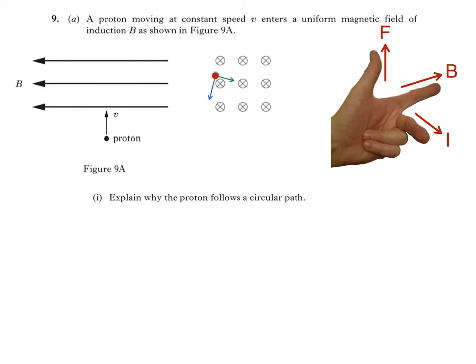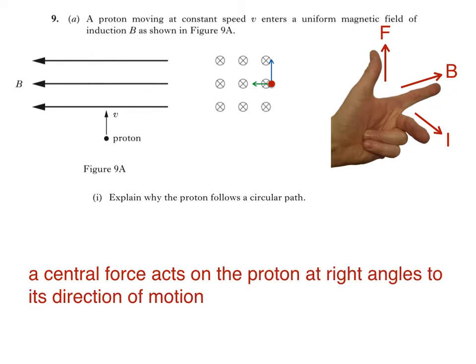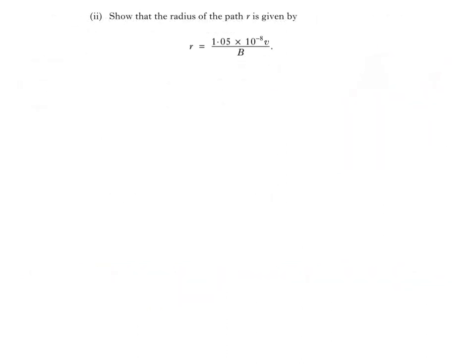At this point, you might want to pause the video to see if you can use the left hand rule to work out the direction of the force experienced by the proton. After all that, here's the answer to the question. The proton follows a circular path because a central force acts on it, at right angles to its direction of motion.